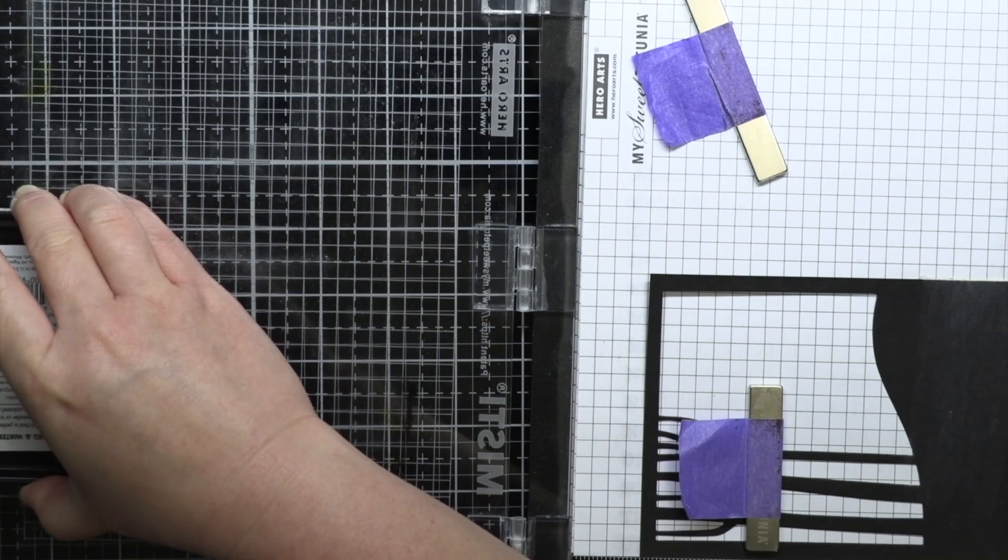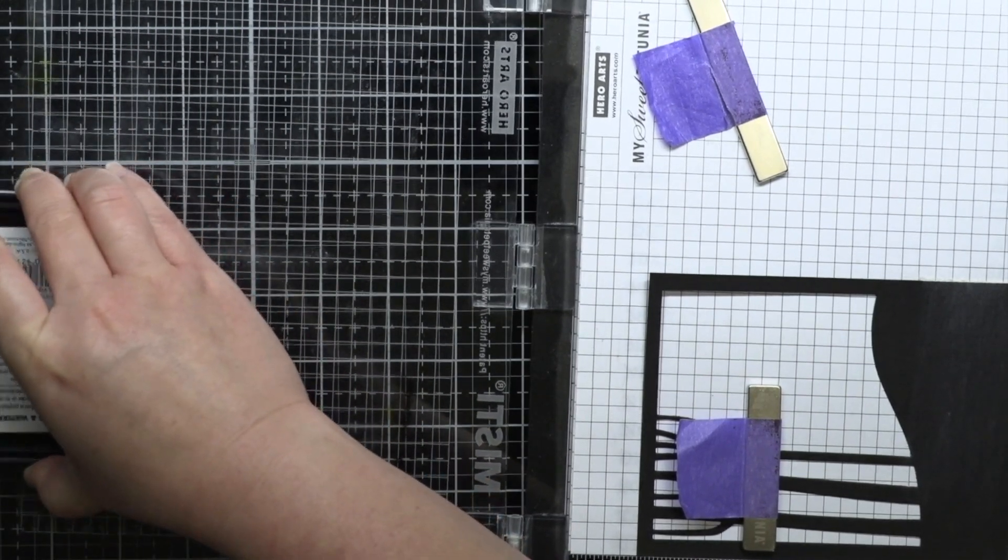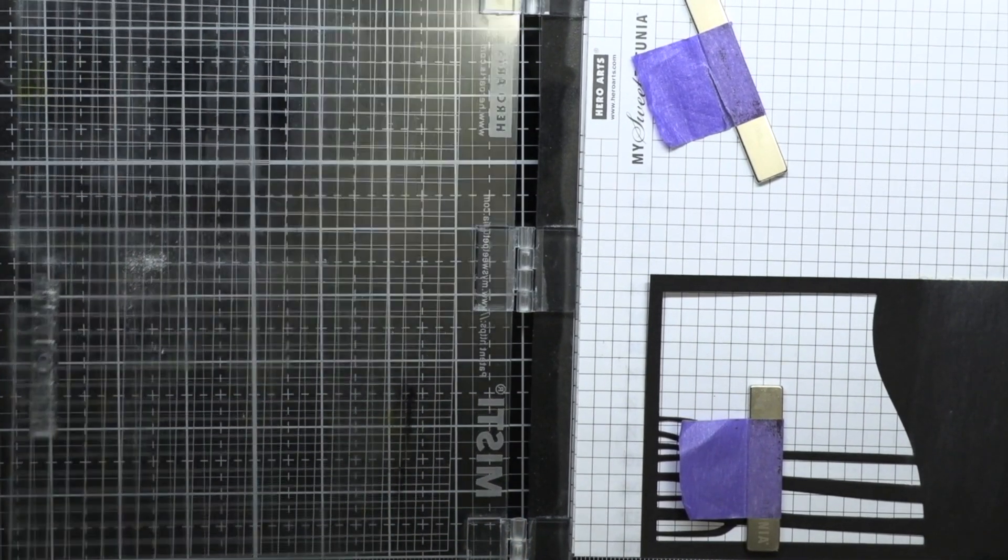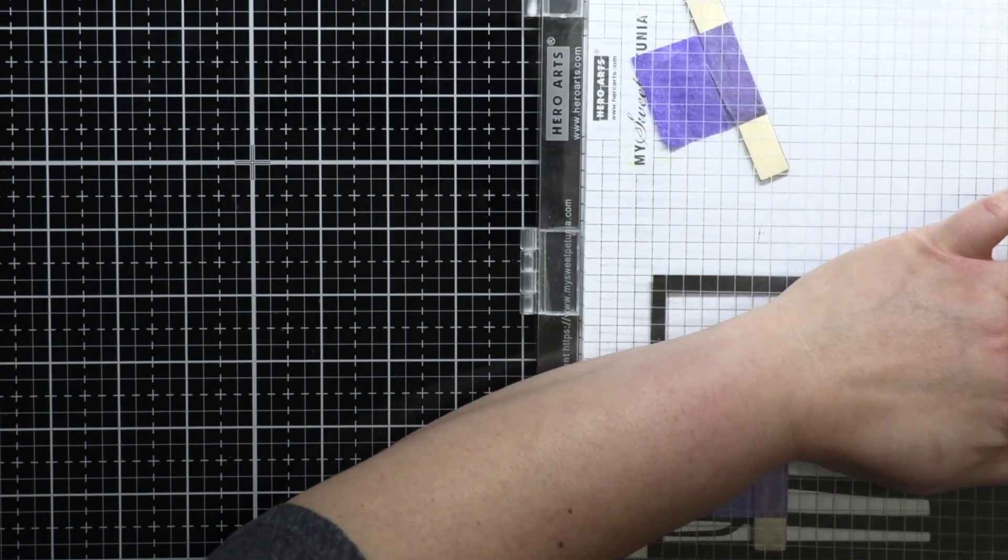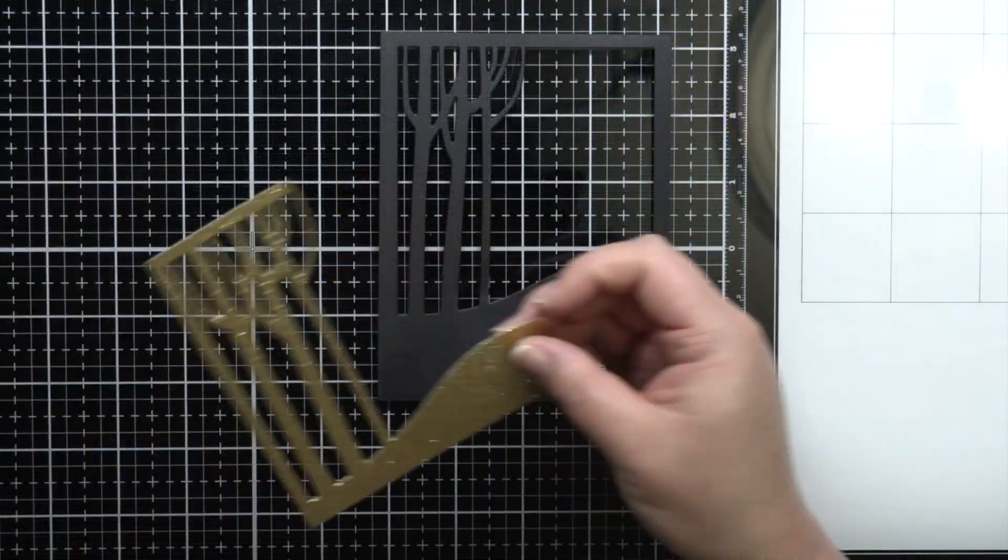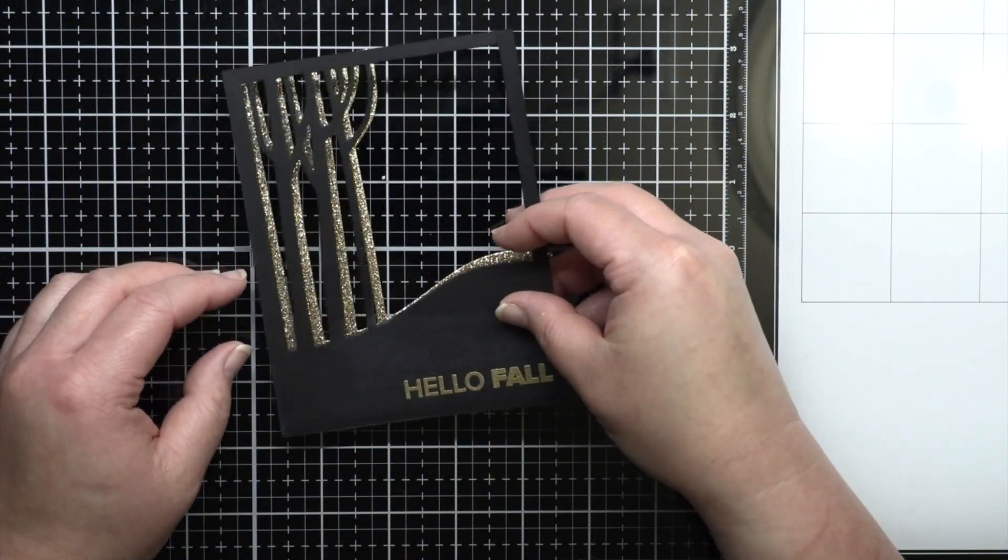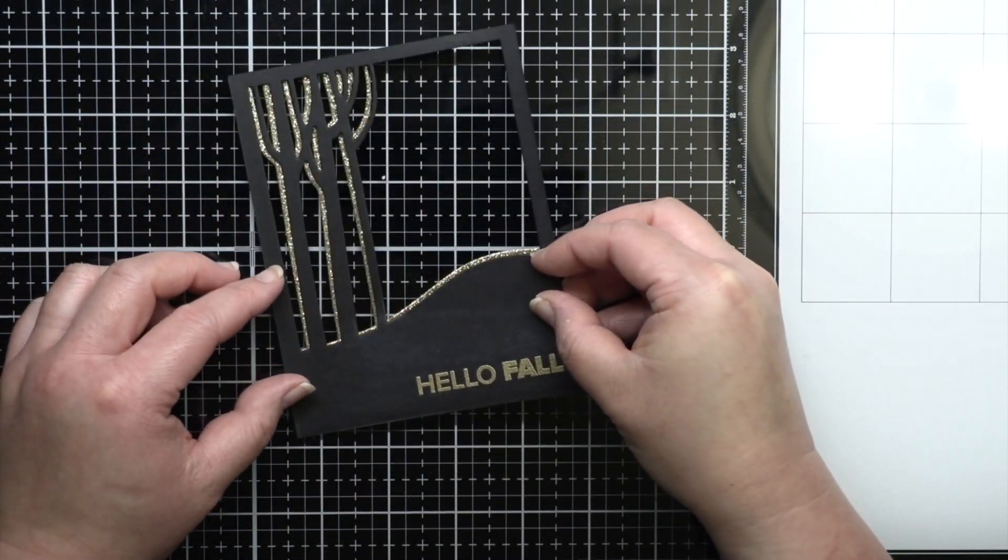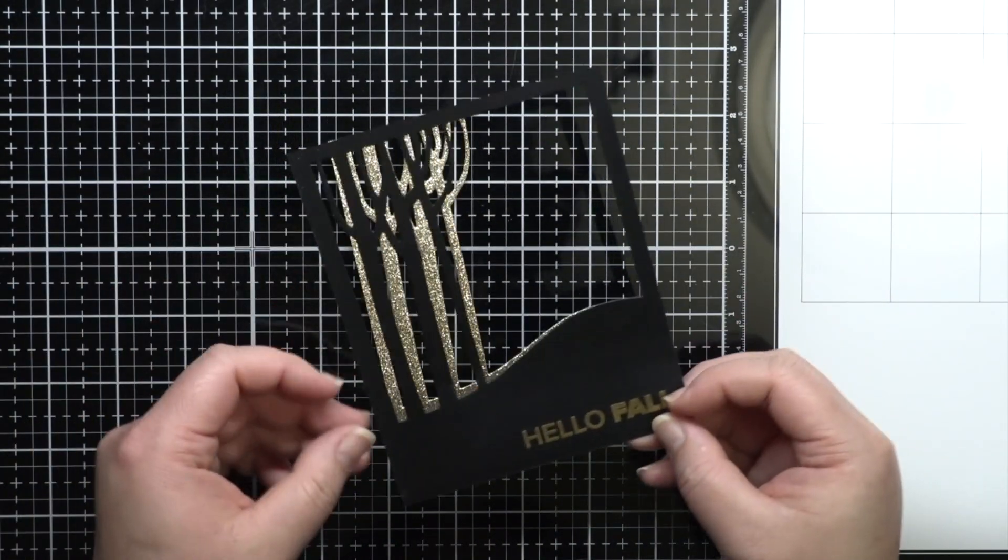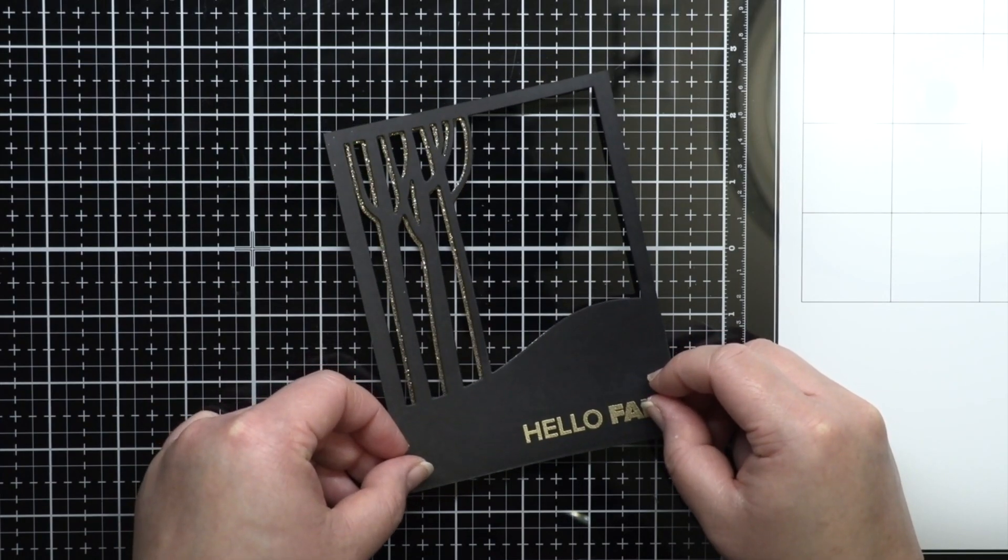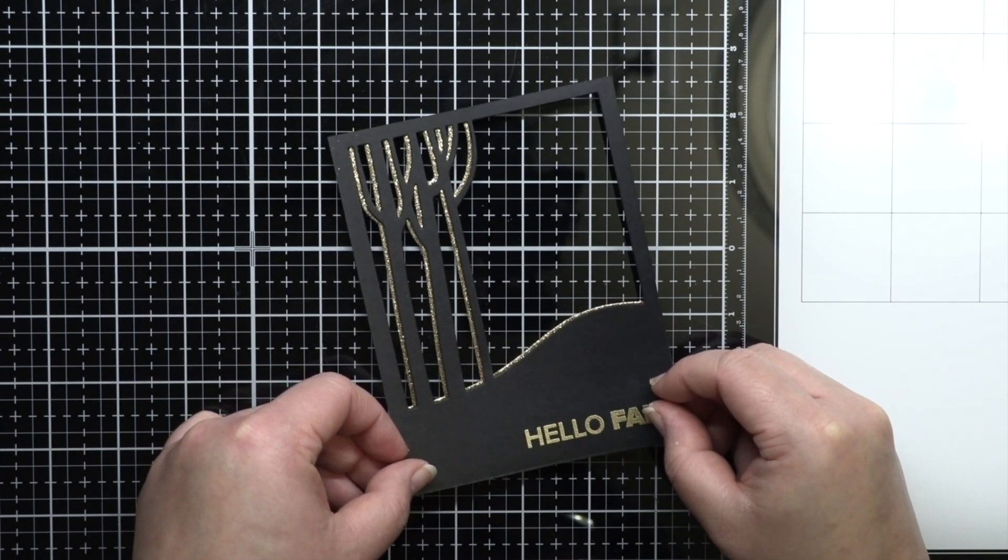I die cut another birch tree cover plate die, this time using black cardstock. I place it in my MISTI and stamp a sentiment from Tis the Season with embossing ink and heat emboss it with gold embossing powder. I want a little more sparkle, so I die cut the same birch tree die from gold glitter cardstock and trim off the edges so only part of the die is still visible. I layer this behind the black cardstock, allowing the gold to peek through just a tiny bit.